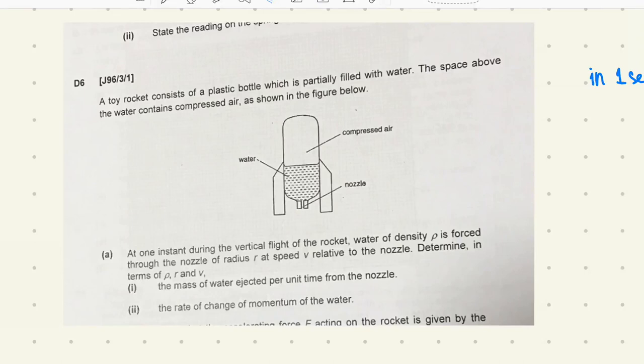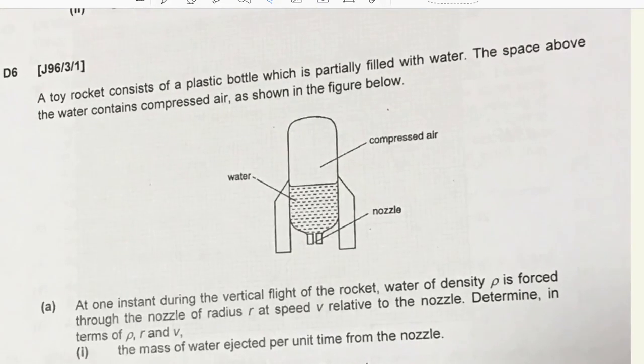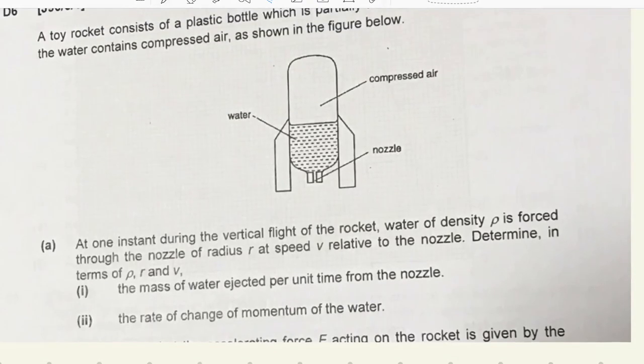A toy rocket consists of a plastic bottle which is partially filled with water. The space above the water contains compressed air as shown in the figure below. You see on the picture, the compressed air will push the water down then the toy rocket will move up.